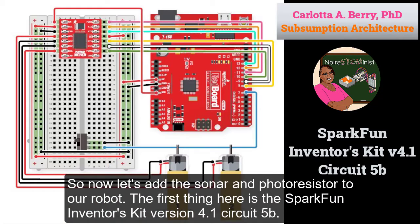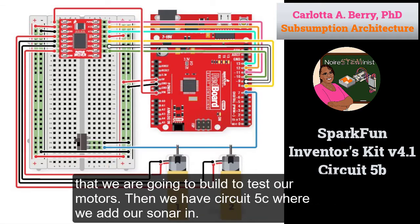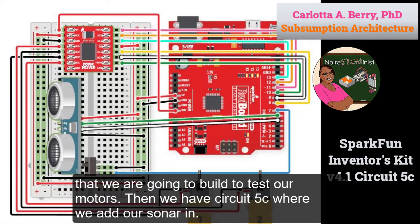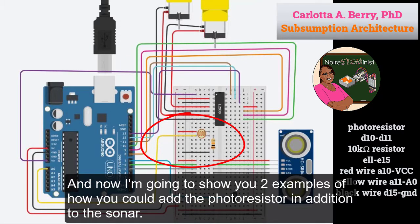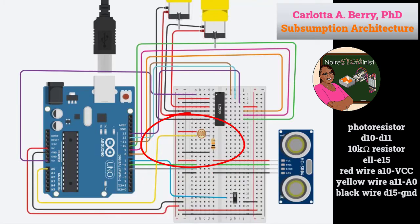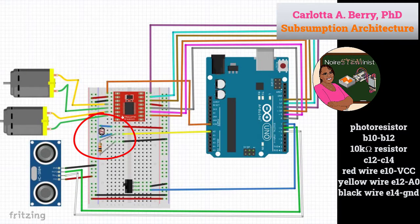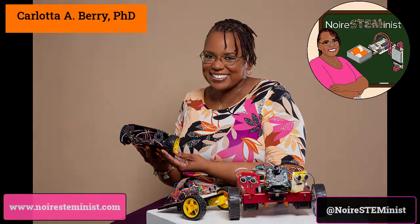So now let's add the sonar and photoresistor to our robot. The first thing here is the SparkFun Inventors Kit version 4.1 Circuit 5B that we're going to build to test our motors. Then we have Circuit 5C where we add our sonar in, and now I'm going to show you two examples of how you could add the photoresistor in addition to the sonar.